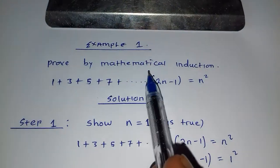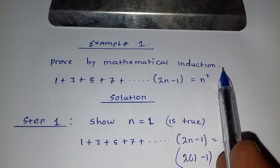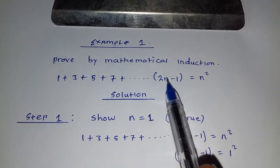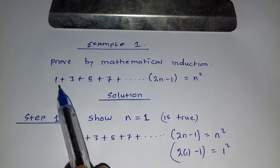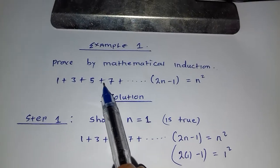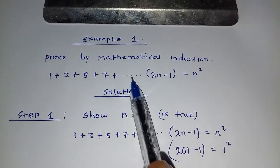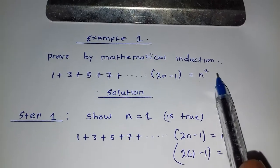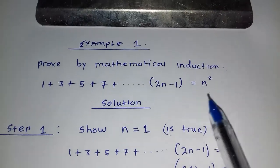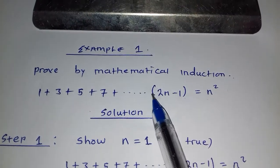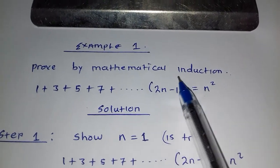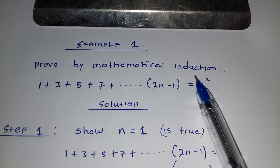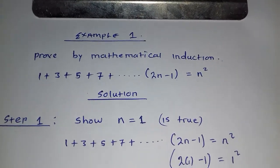Prove by mathematical induction. We are given this formula here: 1 plus 3 plus 5 plus 7 plus ... plus (2n minus 1) is equal to n squared. Now, how do we prove this formula by mathematical induction? We are going to use our basic steps.